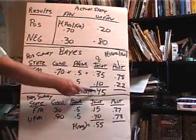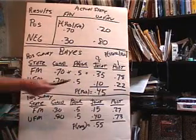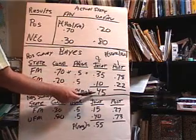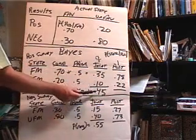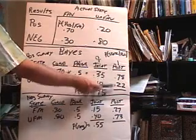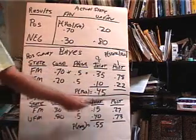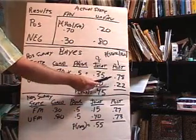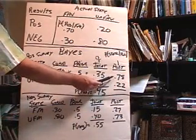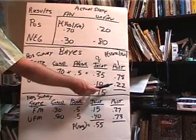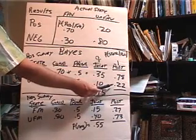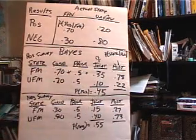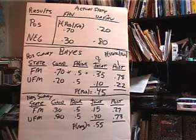To get the posterior probabilities, we divide: 35 over 45 gives 78%, and 10 over 45 gives 22%. This column of posteriors must sum to one. So 78% is the probability of favorable given positive, and 22% is the probability of unfavorable given positive. In the next video we'll see that these are exactly what we need for our decision tree.